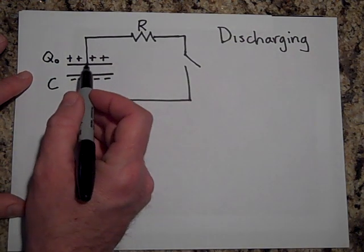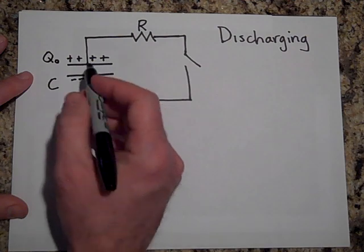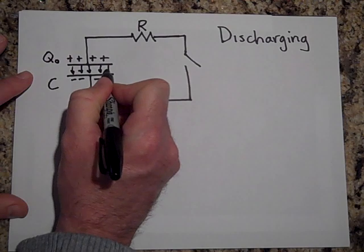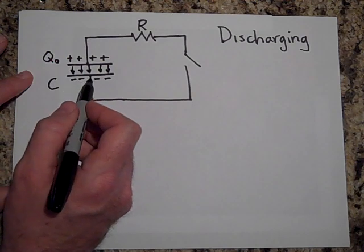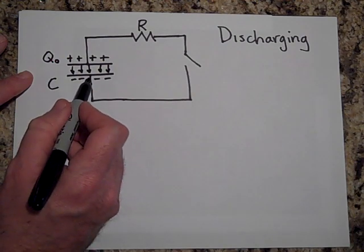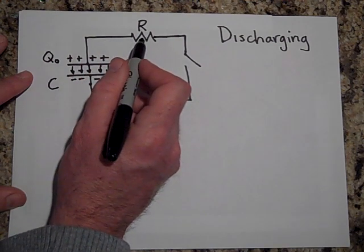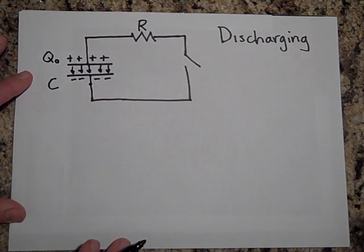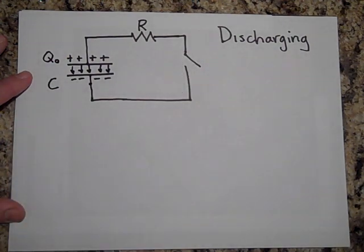We have some voltage across here. Before I close this switch, Kirchhoff's loop rule still has to be obeyed. There's an electric field right here. If I start here in the loop and go up — anytime you go against the field, you gain voltage. I don't lose any voltage here because there's no current, so there's no voltage drop. All my voltage drop is across that switch, so whatever the voltage drop is across the capacitor, that's the voltage drop across the switch.